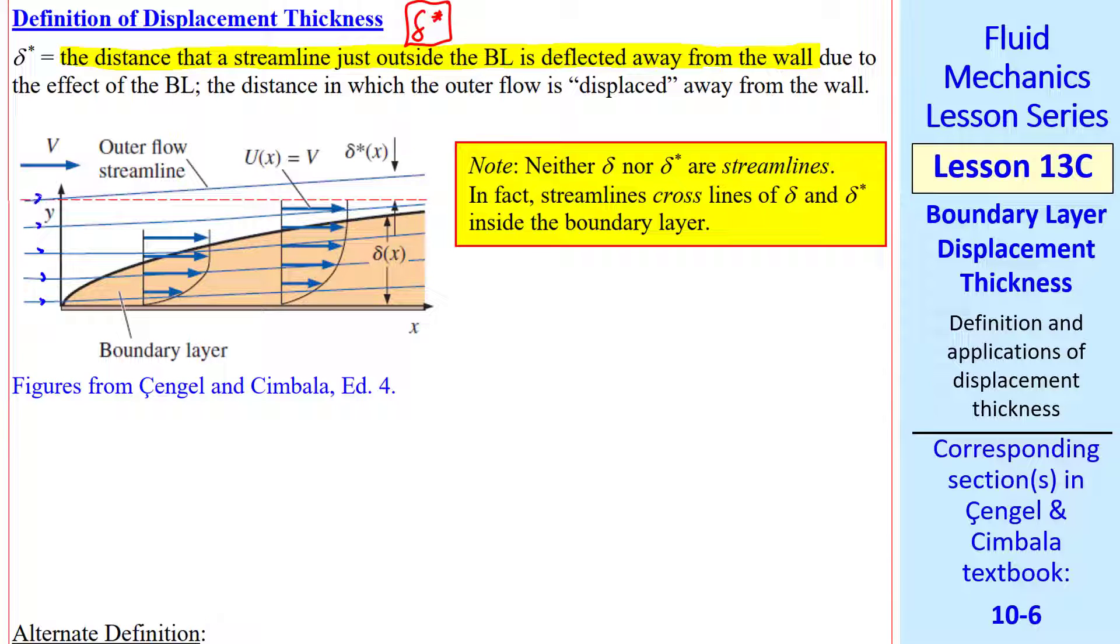I show here flow over a flat plate with a greatly exaggerated boundary layer in the y direction for illustrative purposes. I also draw several streamlines. From this definition, we look at a streamline outside the boundary layer, and we see that it's deflected up. Why is it deflected? Well, there are actually two components of velocity, u and v. v is very small compared to u, but it's not zero. So, in the boundary layer, the resultant velocity v is tilted upward, as we see in these streamlines. This occurs through the boundary layer and above the boundary layer, and displacement thickness is this distance at which a streamline outside of the boundary layer deflects up.